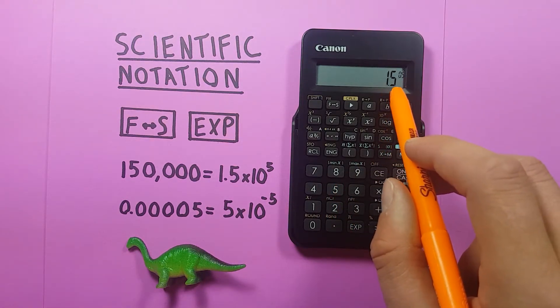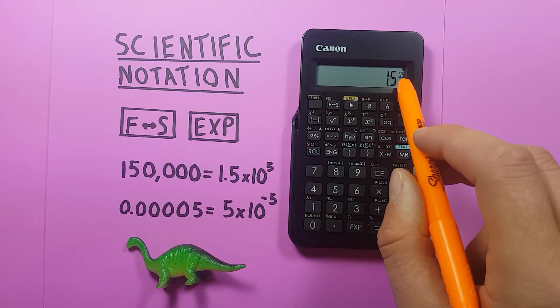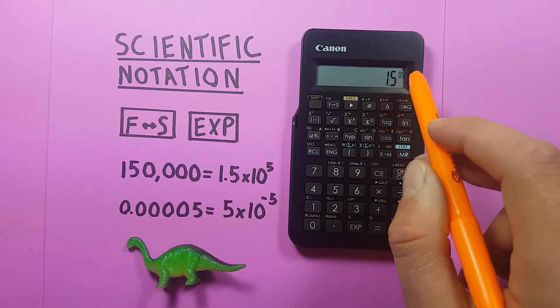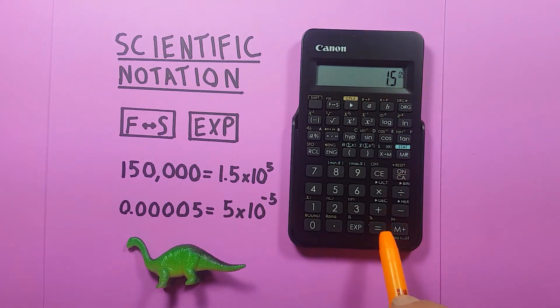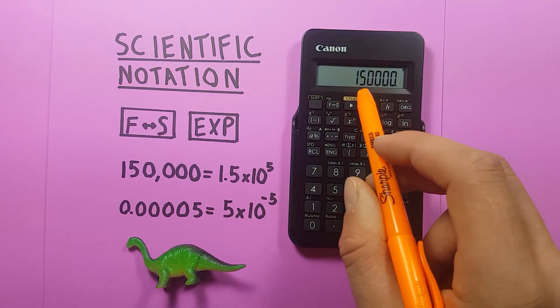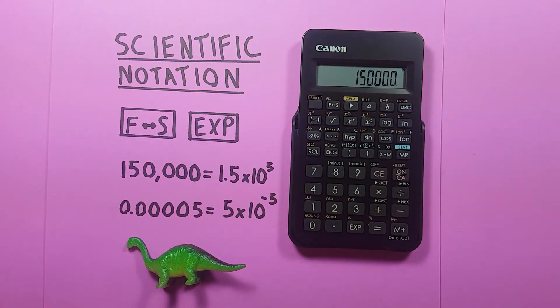And there you can see 1.5 times 10 to the power of 5. If we press equals, you see it converts to 150,000.